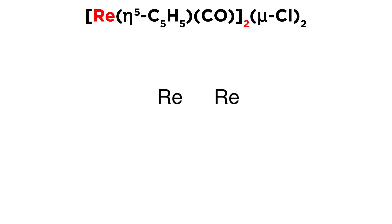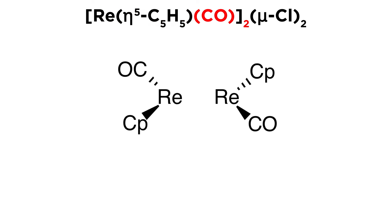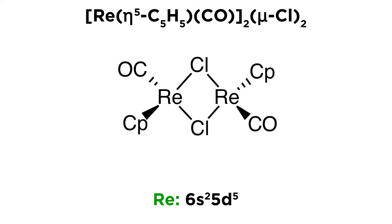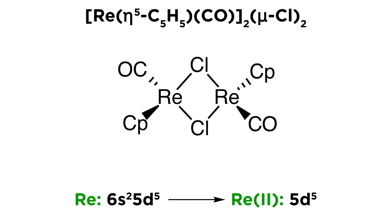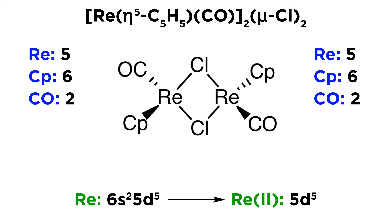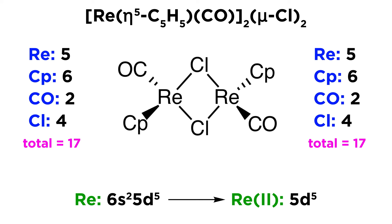Let's try one more. We have a binuclear rhenium complex, where each metal is bound to a Cp ligand and a carbonyl, and then there are two bridging chlorines. Rhenium is 6s²5d⁵, so the metals have seven valence electrons. The Cp ligand is minus one, and the chlorines are each minus one, but coordinated to two metals, so that's minus one to each metal. With a total of minus two, each rhenium center must be in the plus two oxidation state, so we drop the s electrons to give five valence electrons. Five plus the six from the Cp, plus two from the carbonyl, plus two from each bridging chlorine, or four total, gives us a total of seventeen electrons. To get to eighteen, we will simply draw one bond between the metals, and that's our complex.